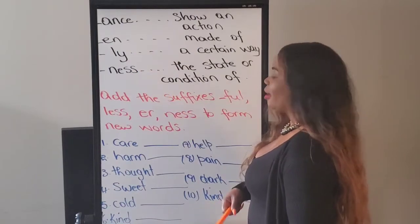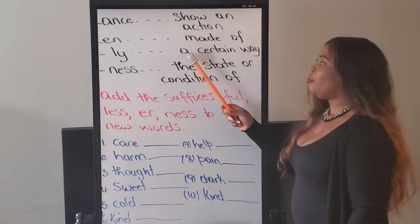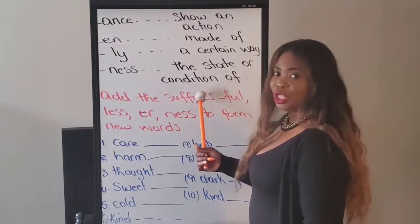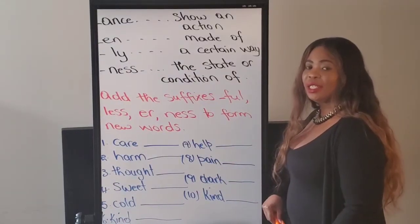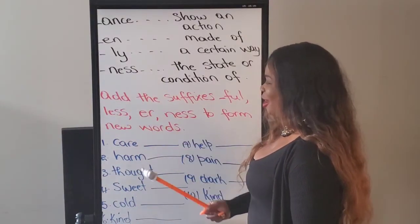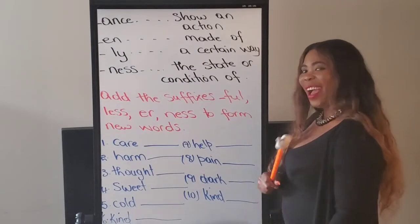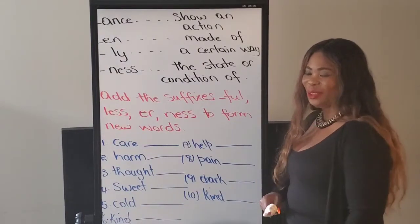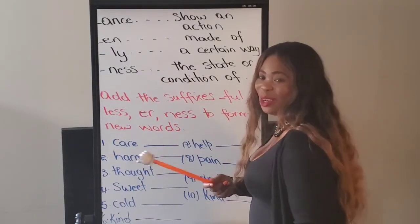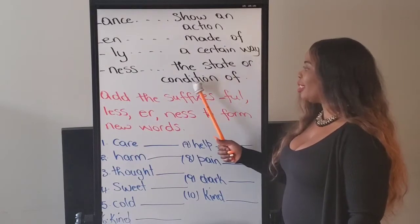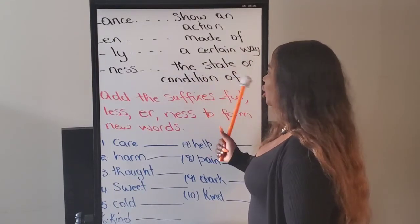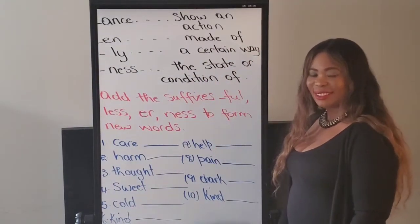And then NESS — the state or condition of. The state or condition of. For example, 'wilderness.' NESS here means the state or condition of, like 'wilderness.' Now, I have an activity for you. You are going to add the suffixes FULL, LESS, ER, and NESS to form new words.